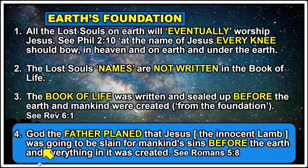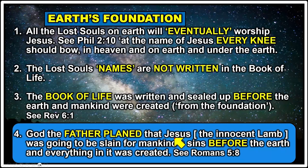Number four: God the Father planned that Jesus — the innocent lamb — was going to be slain for mankind's sins before the earth and everything in it was created. The plan for Jesus to come to earth and live and die a sinless life was put together before any animals, trees, plants, or even Adam and Eve were created. God had already looked ahead — nothing catches God flat-footed.